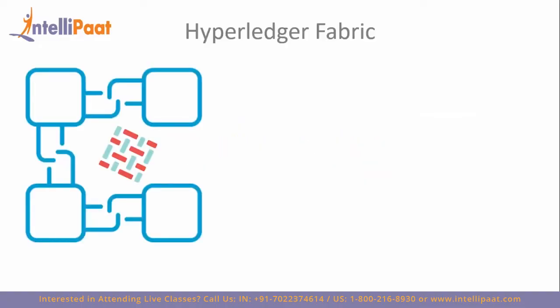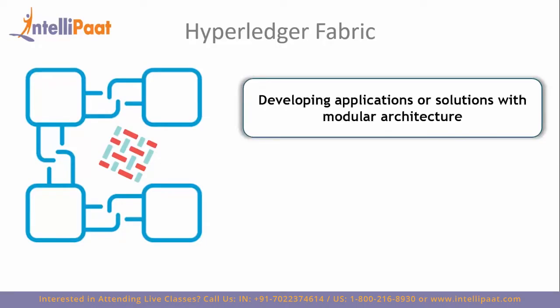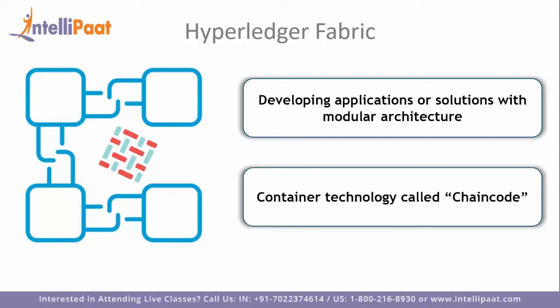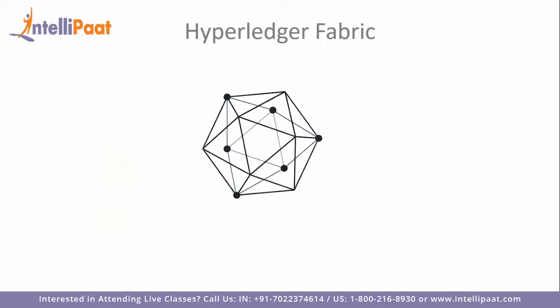Hyperledger Fabric is a blockchain framework implementation intended as a foundation for developing applications or solutions with a modular architecture. It leverages container technology to host smart contracts, which are called chaincode, and this comprises the application logic of the system.